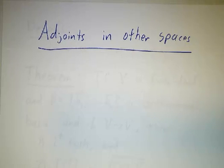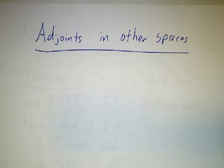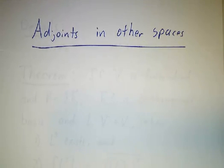In the last video, we talked about how to take adjoints in R^n or C^n with the standard inner product, and it boiled down to just taking the transpose or the transpose conjugate of a matrix. Now we're going to talk about what happens if we're in another vector space, or maybe R^n or C^n with a non-standard inner product.